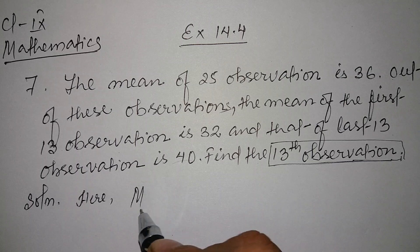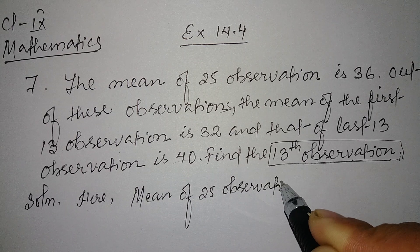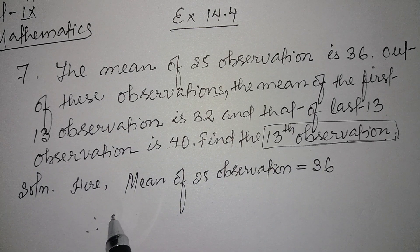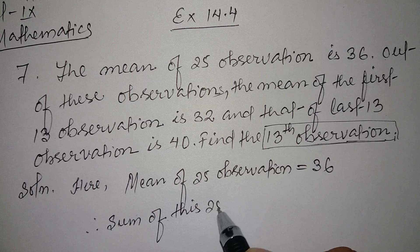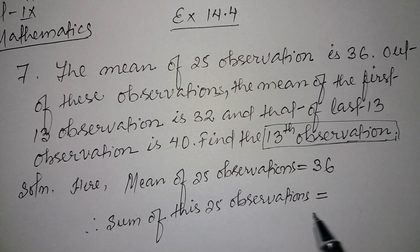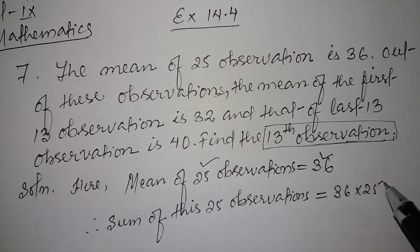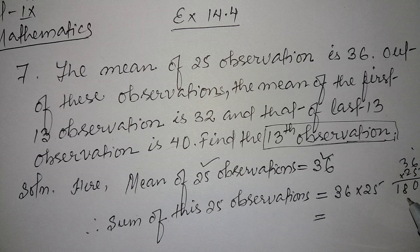The mean of 25 observations is equal to 36. Therefore, the sum of observations is equal to mean into number of observations, so 36 into 25, which gives us 900.